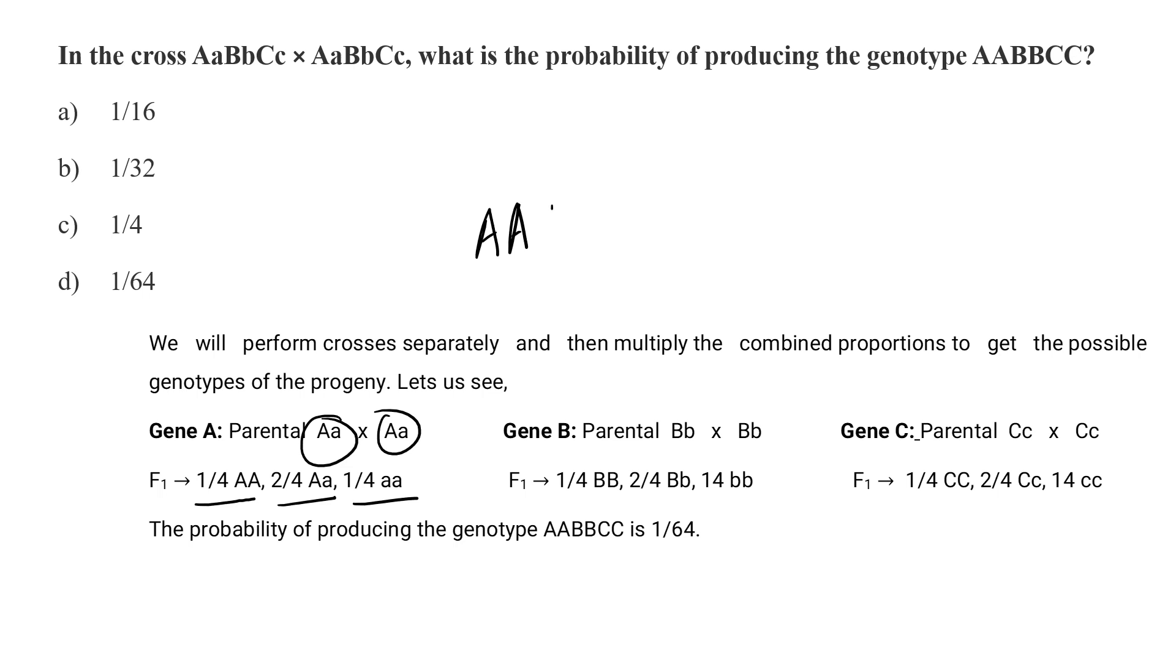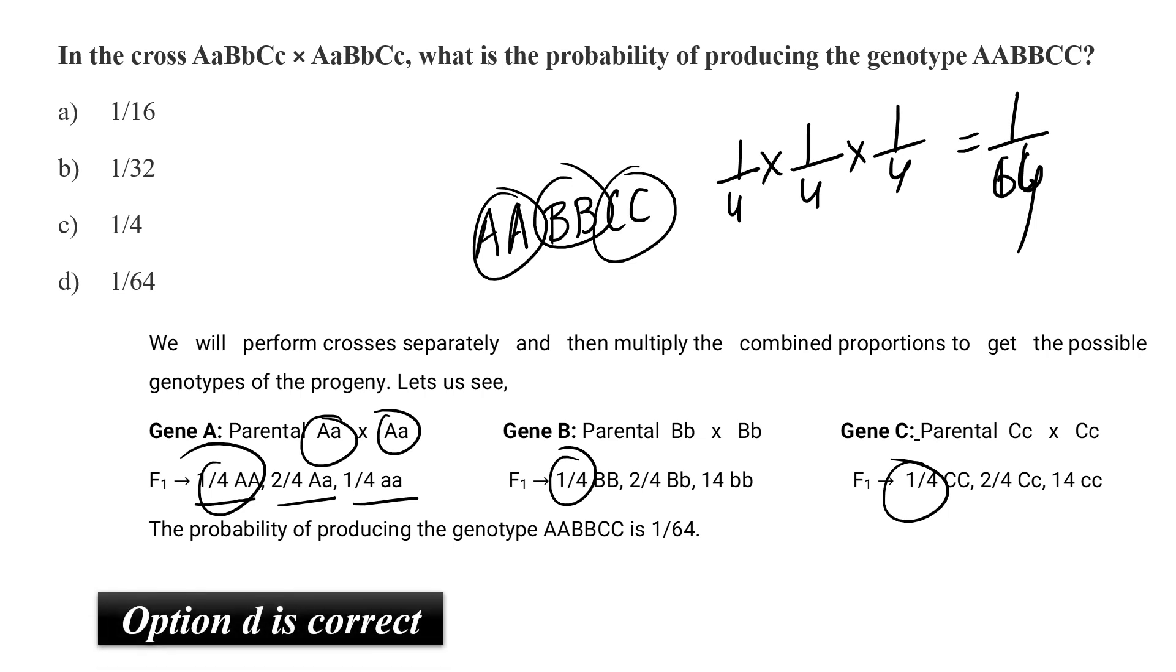Probability 1/4 capital AA, probability 1/4 capital BB, probability 1/4 capital CC. That means the combined probability would be 1/4 times 1/4 times 1/4, that means around 1/64. That means option D. So here option D should be the correct answer.